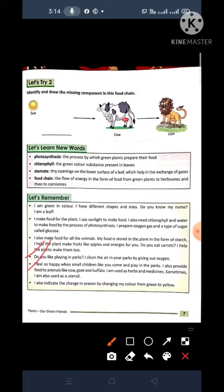Next is I feel so happy when small children Like to come and play in the parks. I also provide Food to animals Like cow, goat and buffalo. Food bhi provide kerti ho Animals ko Jiasse ki cow, goat or buffalo.